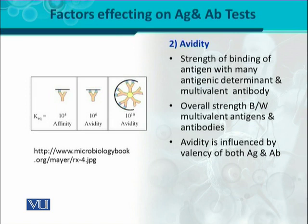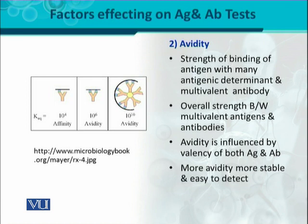Avidity is influenced by the valency of both antigen and antibody. Valency antigen کی بھی ہو سکتی ہے اور antibody کی بھی — antigen کی valency سے مراد ہے کہ antigen کے اوپر جو antigenic determinants یا epitopes ہیں وہ، on the other hand antibody کی valency مطلب antigen binding sites. In the last case, five molecules of IgM antibody provide a valency of 10, while the antigen has six antigenic determinants. The more the valency of antigen and antibody, the more avidity, and the more stable the interaction will be.